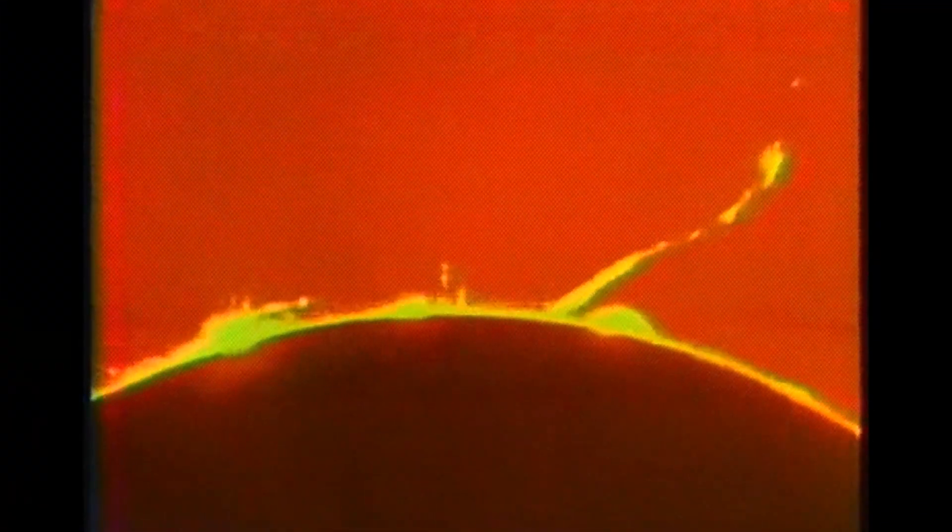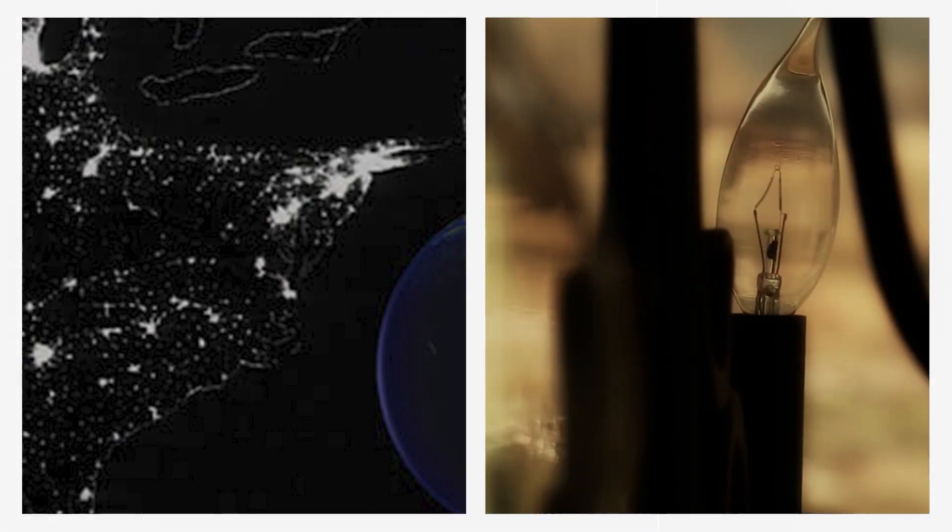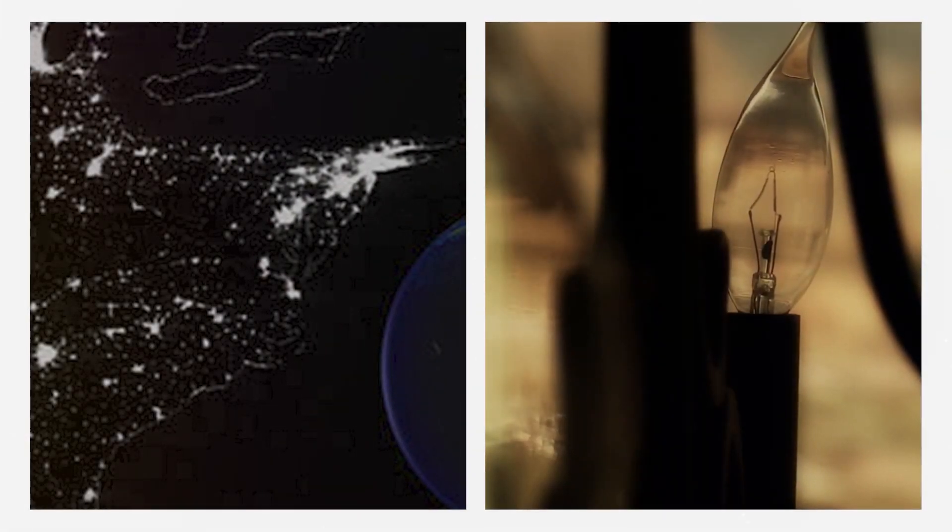A notable example of this occurred in Quebec in March 1989. Following a powerful solar flare from the sun, a subsequent burst sent a billion tons of gas directly toward Earth. This event led to a 12-hour blackout in the region.